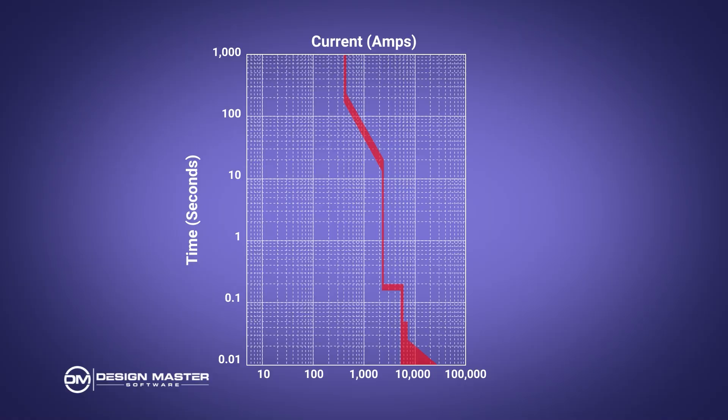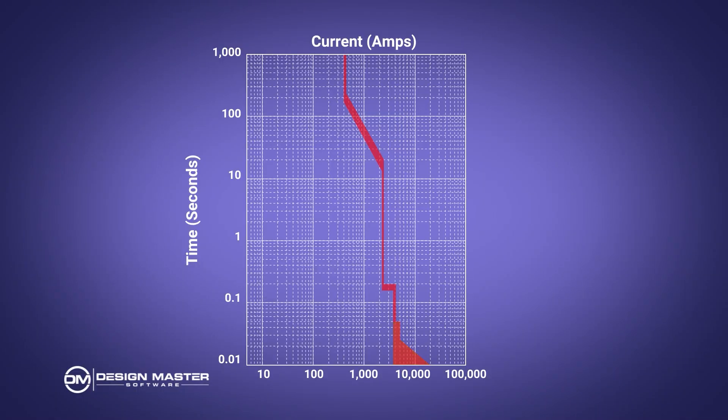The final setting is the instantaneous pickup — this is where the breaker will trip immediately. After that you have the instantaneous delay, which is how quickly instantaneous actually is. That instantaneous delay is part of the curve, but there's never a setting for it on the breaker; the instantaneous pickup is always the last setting. Different electronic curves have varying numbers of these settings available to change.